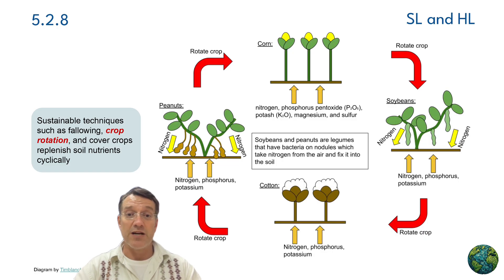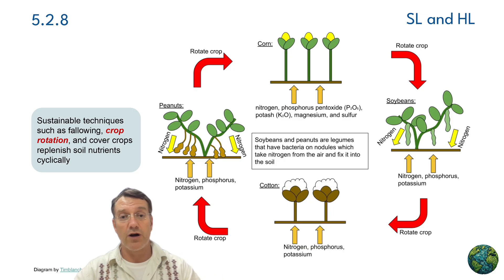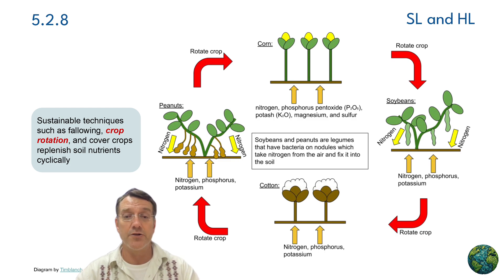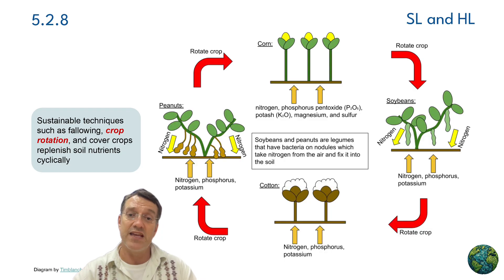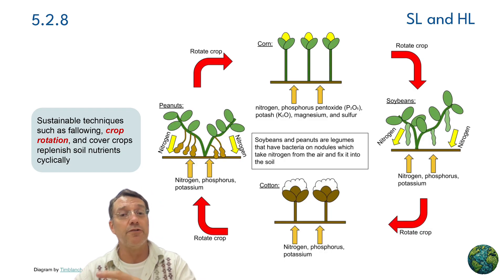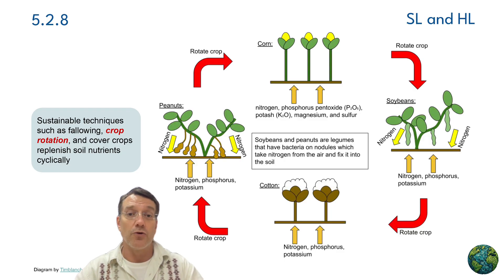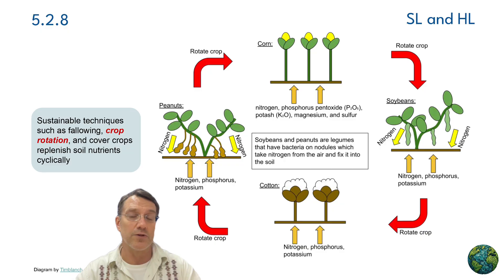This diagram shows how sustainable techniques like fallowing, crop rotation, and cover crops can replenish soil nutrients cyclically. Legumes like soybeans and peanuts have bacteria in root nodules that take nitrogen from the air and fix it into the soil in forms that plants can access. Different crops contribute different nutrients, so rotating them maintains soil fertility naturally.